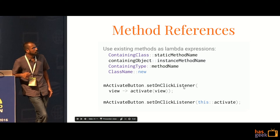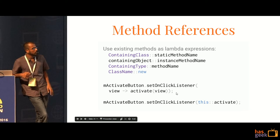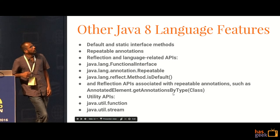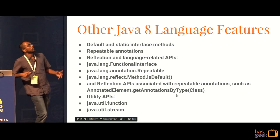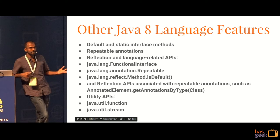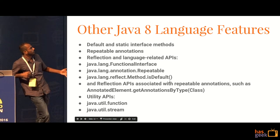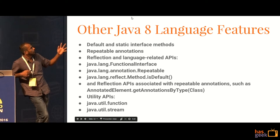Method references allow you to make it even shorter — they allow you to call a method within the lambda expression. For instance, in this lambda expression, you can just call the activate method instead of writing the full call. So if you are in the magical land of Android N and above, you get utility APIs, stream APIs, and a lot of other things.